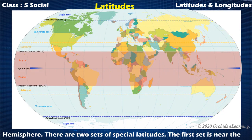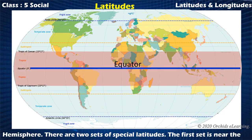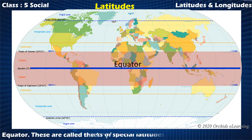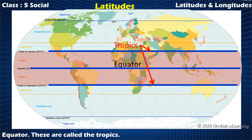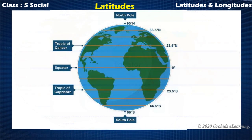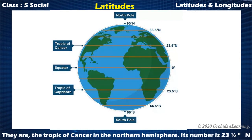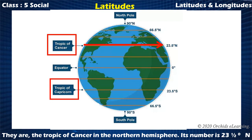There are two sets of special latitudes. The first set is near the equator — these are called the tropics. They are the Tropic of Cancer in the northern hemisphere, numbered 23 and a half degrees N, and the Tropic of Capricorn in the southern hemisphere.